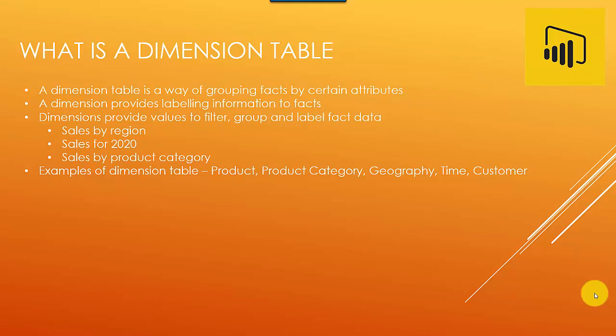Examples of dimension tables which then become very evident from our discussion above is Product, Product Category, Geography, Time, Customer. These could become your dimension tables and they might have attributes within them.